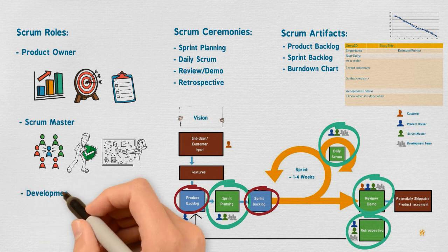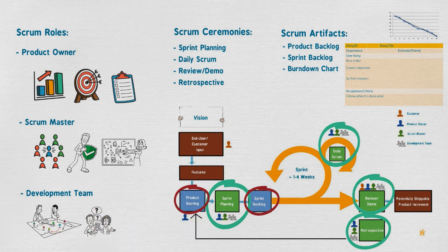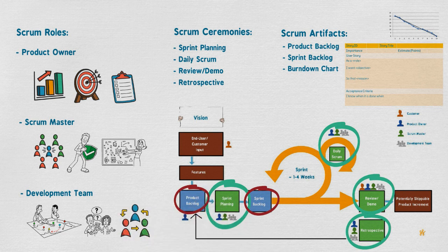Finally, the development team is the main pillar of the implementation of the product. Self-organized, they are responsible for planning and estimating the required work, the quality of work in line with the definition of done, and adaptation to achieve the goals of the sprint. The responsibility is shared between them as a team, not as individuals, so they hold each other accountable as professionals.